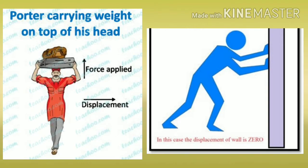दूसरा example — कोई आदमी है जो दिवार को धक्का दे रहा है. तो क्या दिवार move होगी? नहीं, दिवार नहीं हिलेगी. अगर उस object में movement ही नहीं हो रही है, वो अपनी जगह से दूसरी जगह नहीं गई, तो आप उसको work में count नहीं करेंगे. Work में displacement भी ज़रूरी है और force भी ज़रूरी है.